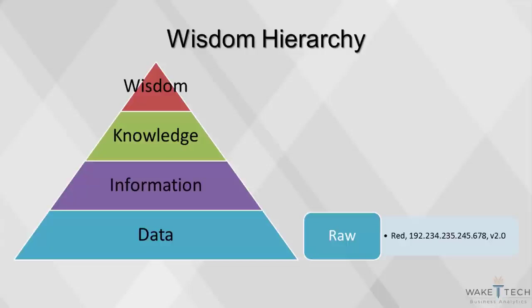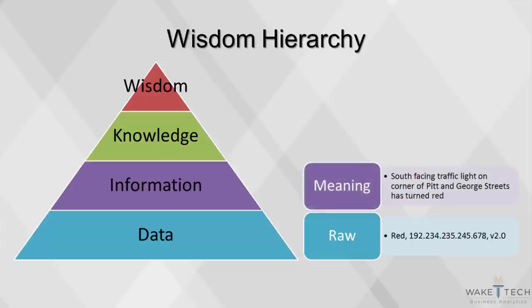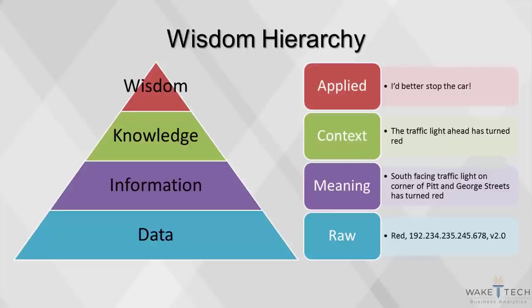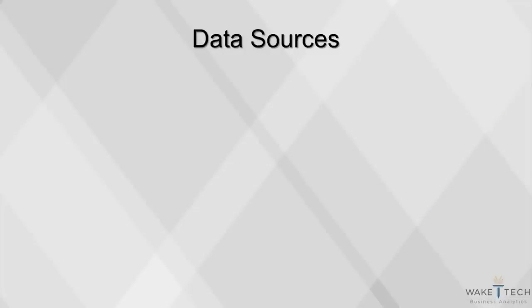Data are numbers or text without any context. Information provides meaning from data, often combining multiple data points to produce a tangible idea. Knowledge provides context from the information, making it directly applicable to a situation. Wisdom applies the knowledge to make a decision. The original data has become useful, enabling an action to be taken.